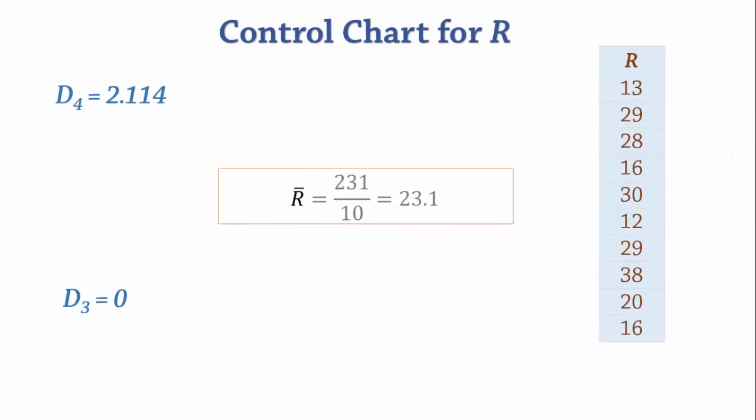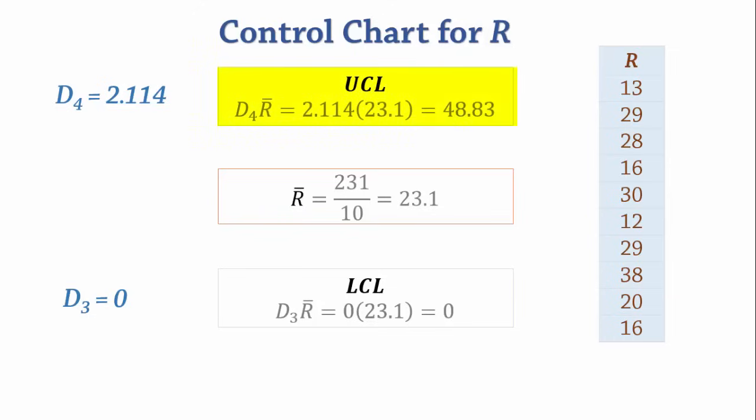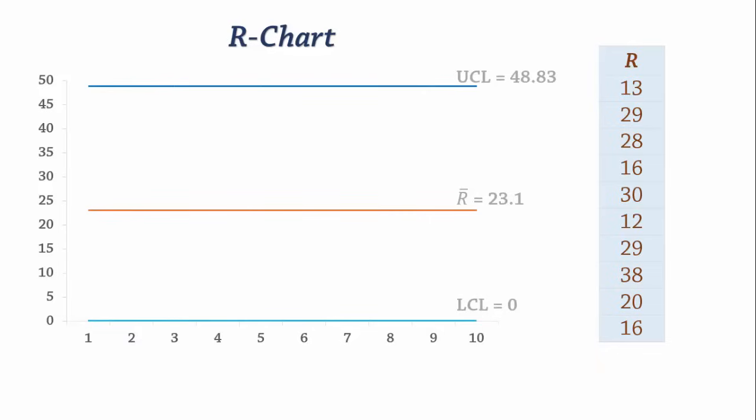So the lower control limit LCL will be 0 times 23.1 which is 0. And the upper control limit UCL will be 2.114 times 23.1 which gives 48.83. For the chart, we can first draw the control limits.